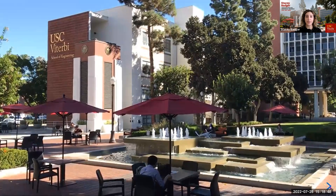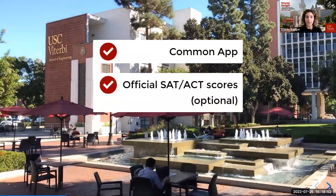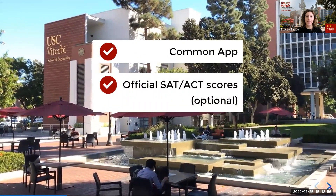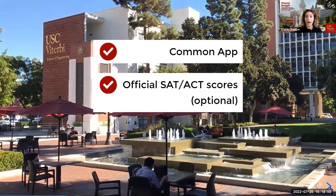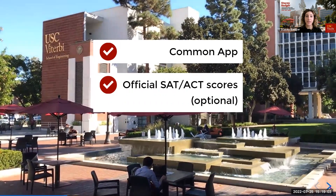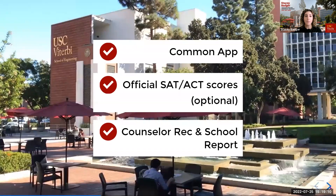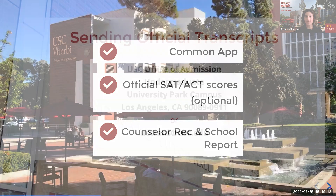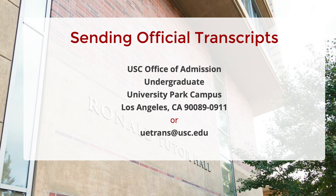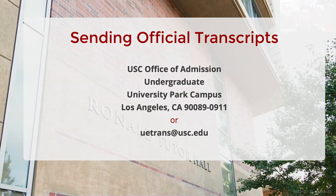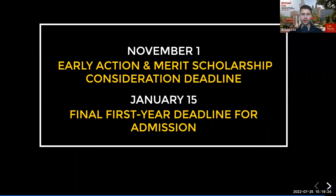A complete application includes the Common App as well as sending your official transcripts and SAT or ACT scores, which you do after you've submitted your Common App. As a reminder, test scores are optional, but if you add test scores to your application you do need to send your official scores. You should also make sure your counselor submits their letter of recommendation, which typically includes your school report and official transcripts — check with your counselor, because if they are not sending your transcripts you need to send them yourself. To be considered for merit scholarships, submit your Common Application by the early action deadline of November 1st. There is no separate scholarship application; submitting by November 1st is all you need. Everything else, such as transcripts or test scores, can come after the deadline.